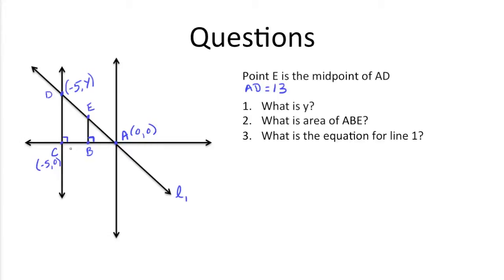So A to C we know without even needing to use the distance formula is 5 because there's no vertical movement. So horizontally it just moves 5 over. So we know AC is 5. We know AD is 13. So because of that, we can use the Pythagorean theorem.